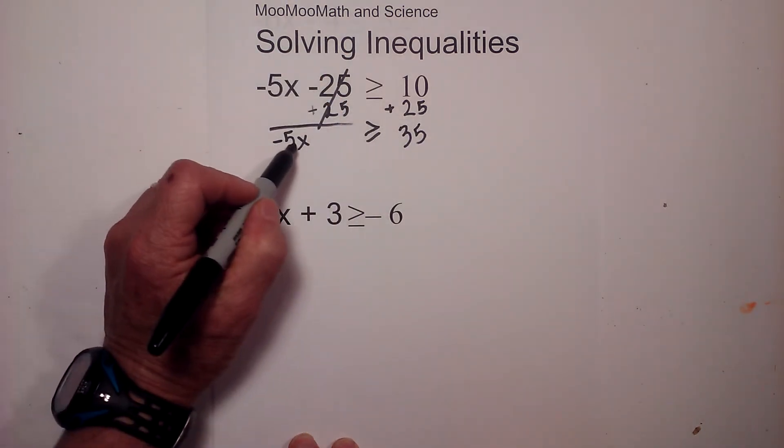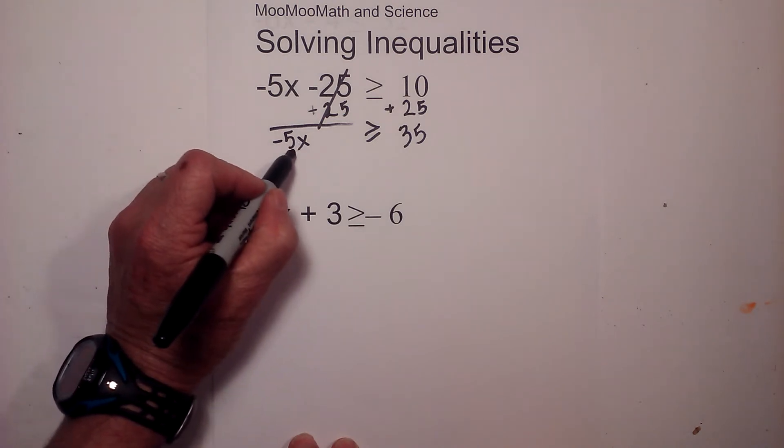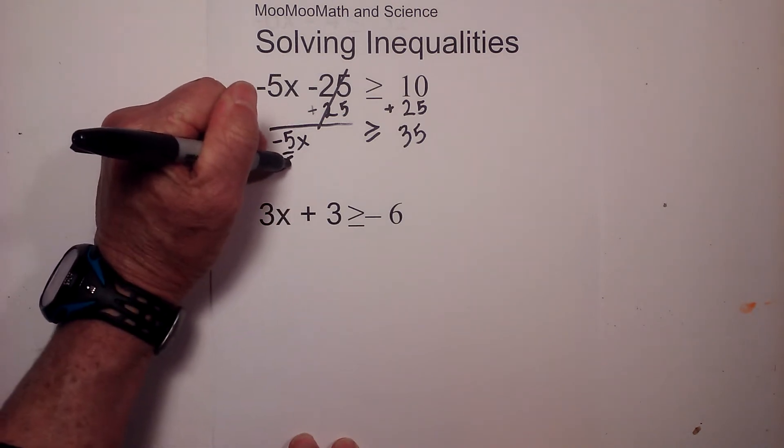I'm going to bring down the negative 5x, here's the inequality sign, and 10 plus 25 is 35. So far so good. Now I need to get x by itself and I can divide each side by negative 5.